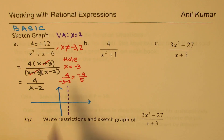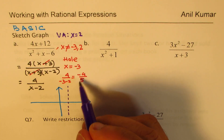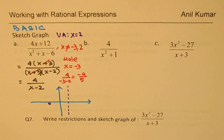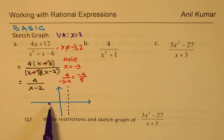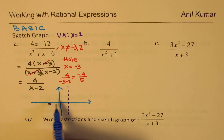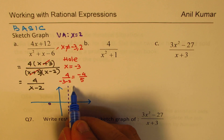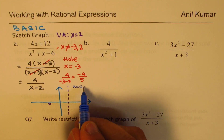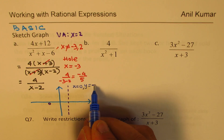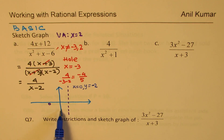At x = -3 we have a hole, located at approximately (-3, -4/5) on the graph, so that point is also not in our domain. To sketch this function we can calculate some simple values. The y-intercept is found by setting x = 0: y = 4 / (0 - 2) = -2. So at x = 0 the value is -2.